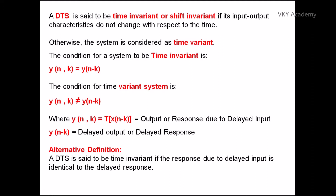What is y(n, k)? Basically, when an input signal is delayed and then supplied to a system, the output signal we receive is y(n, k) — which is the output or response due to the delayed input. With this condition, the alternative definition for a time invariant system is: a discrete time system is said to be time invariant if the response due to the delayed input is identical to the delayed response. This is the alternative definition for a time invariant or shift invariant system.